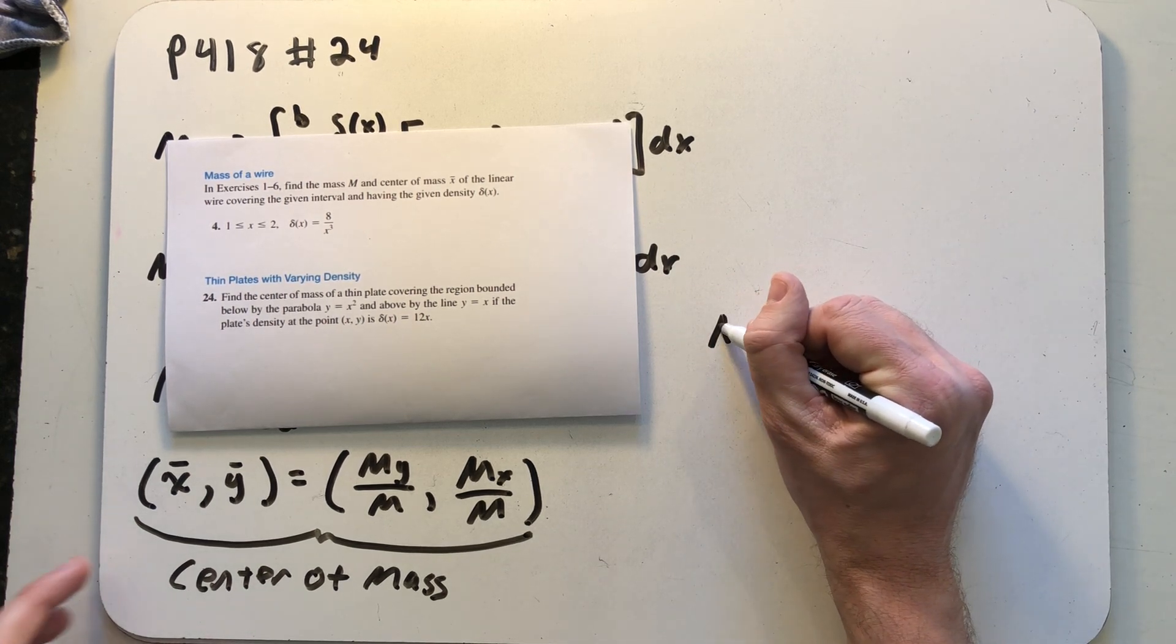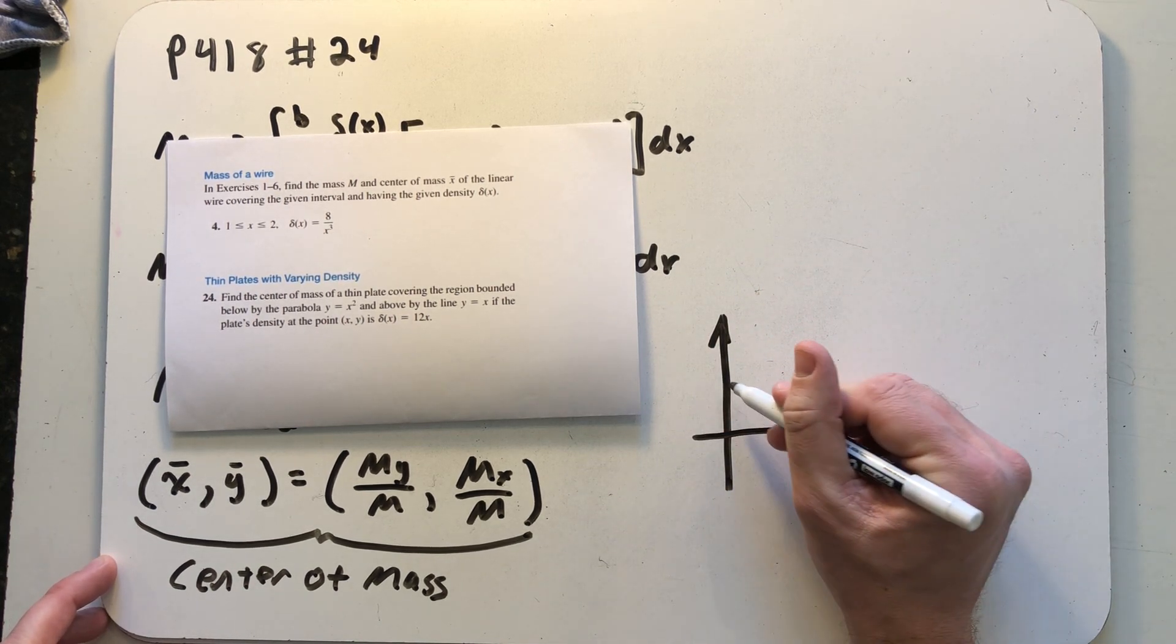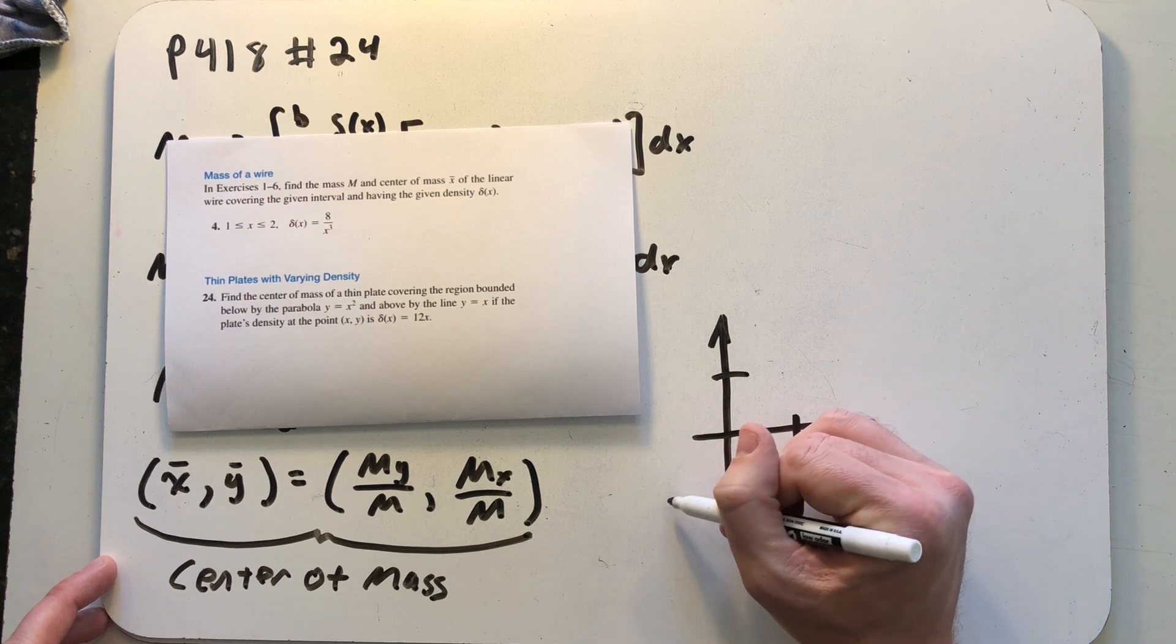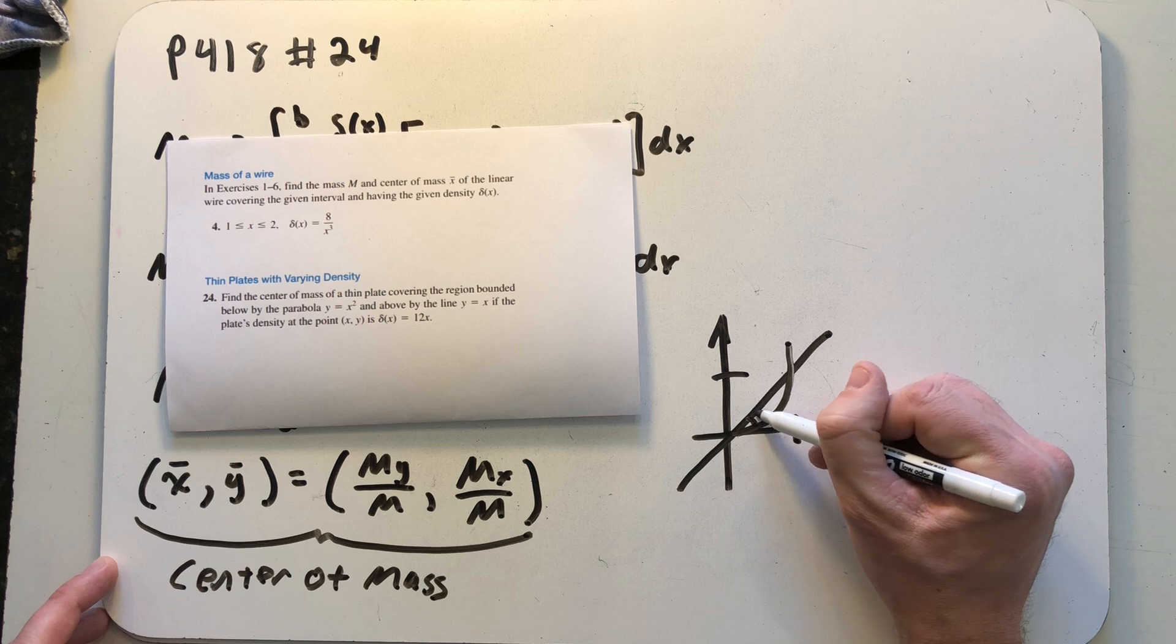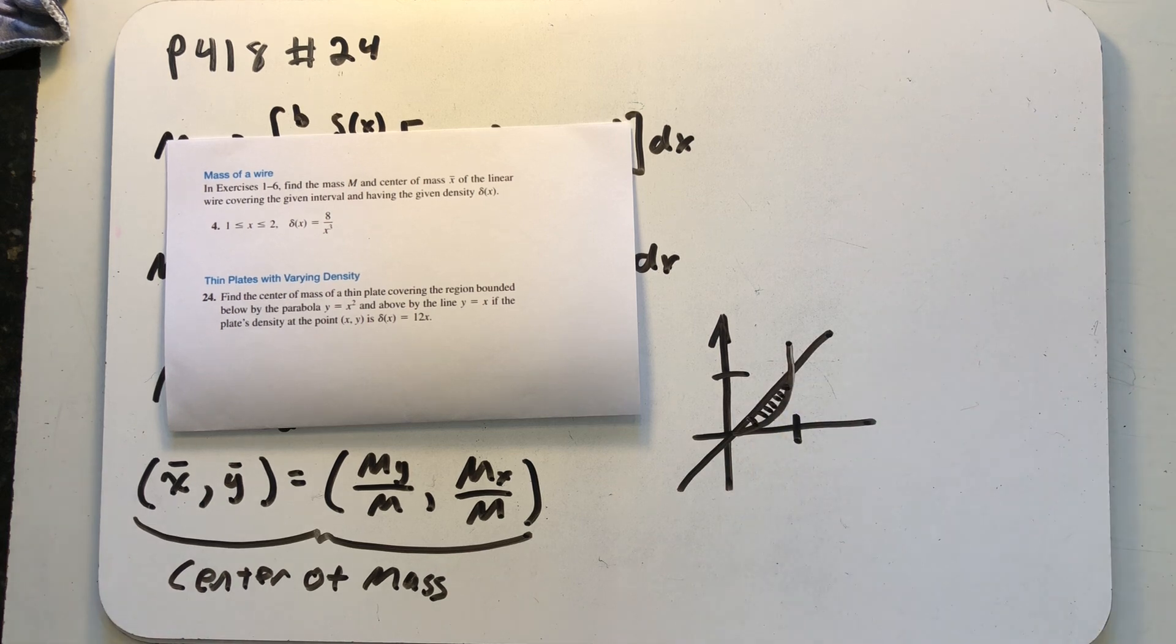Well not a hard region to imagine. I have the line y equals x and the parabola y equals x squared and I just have this very small region here. So we have a better picture of it for purposes of this video.